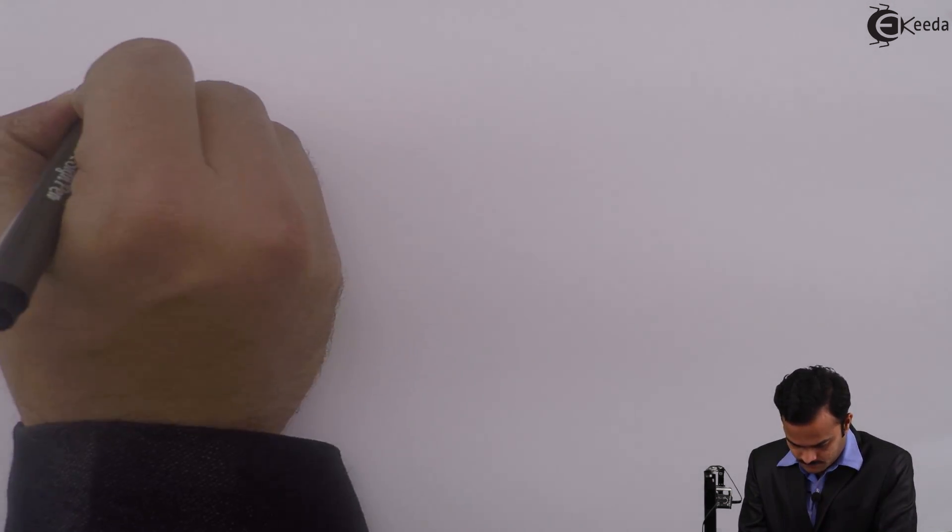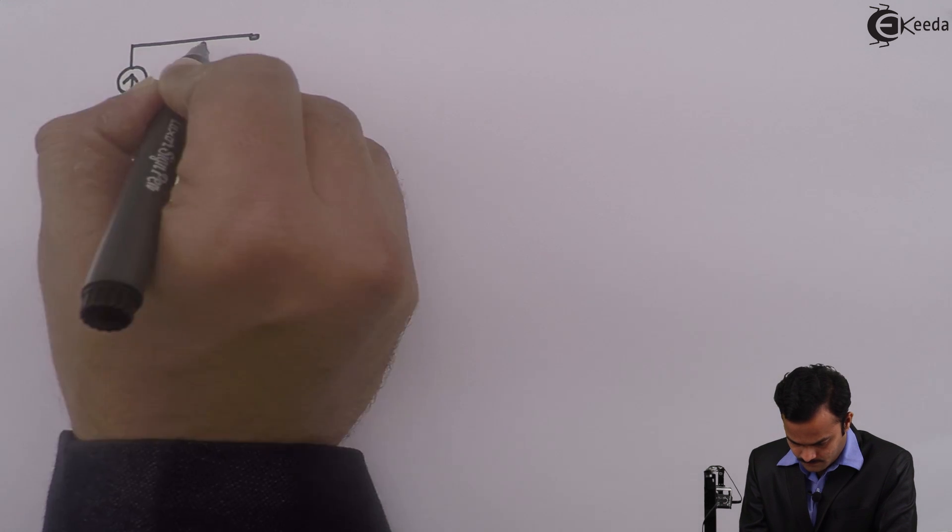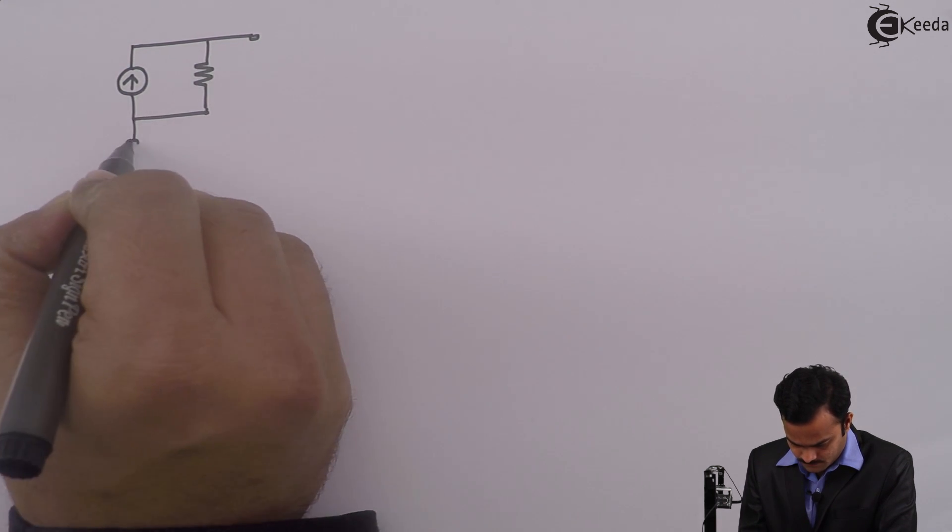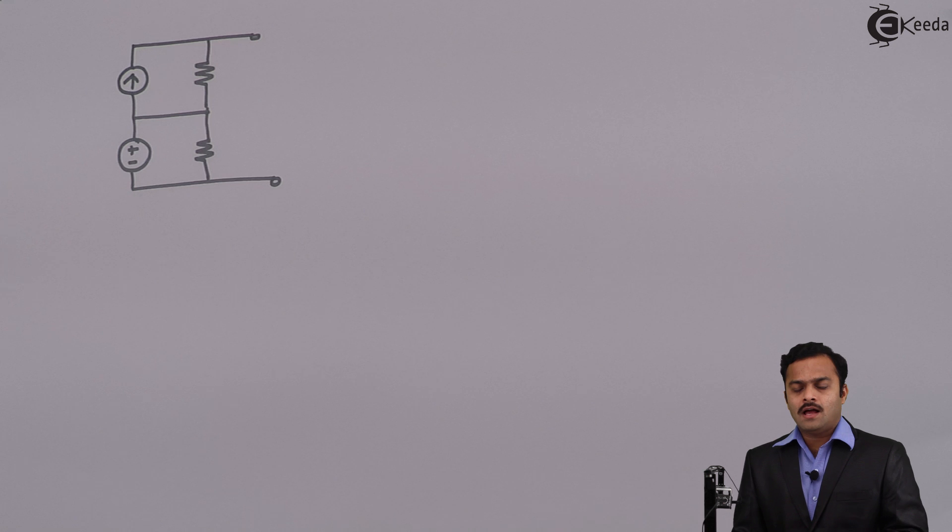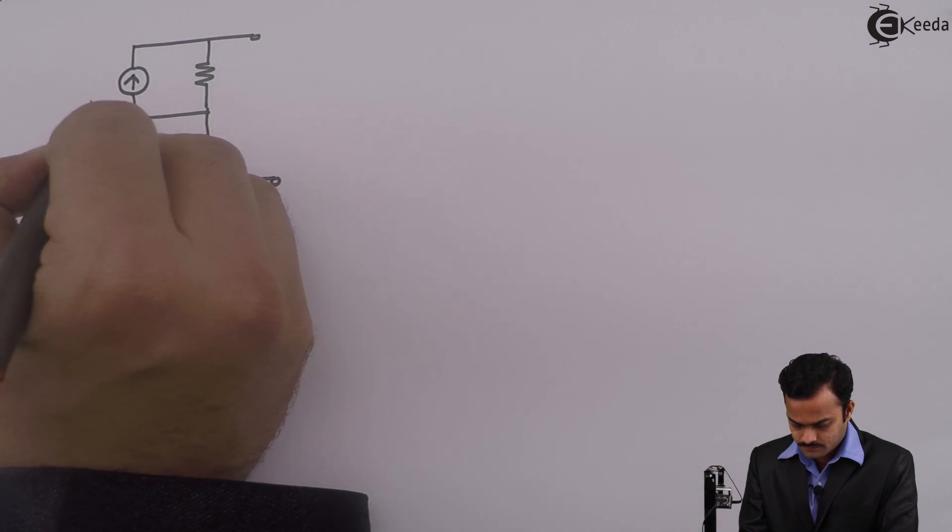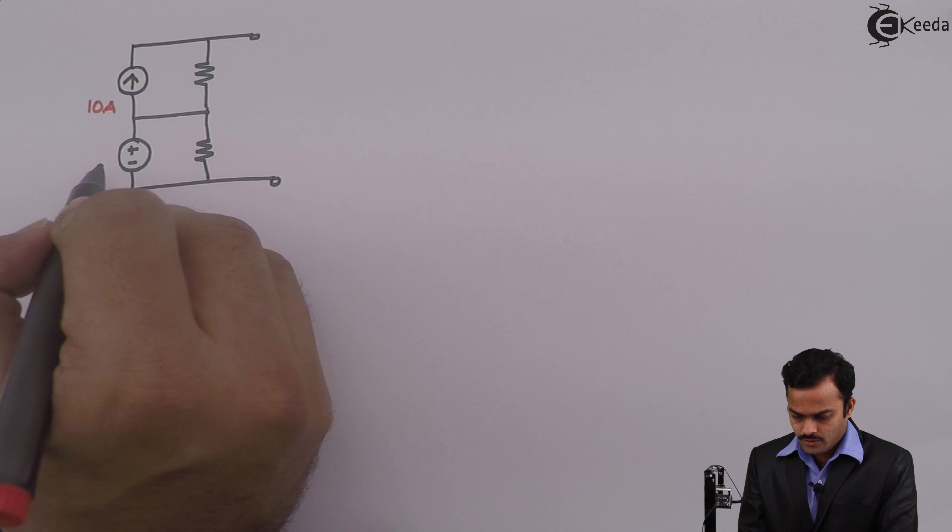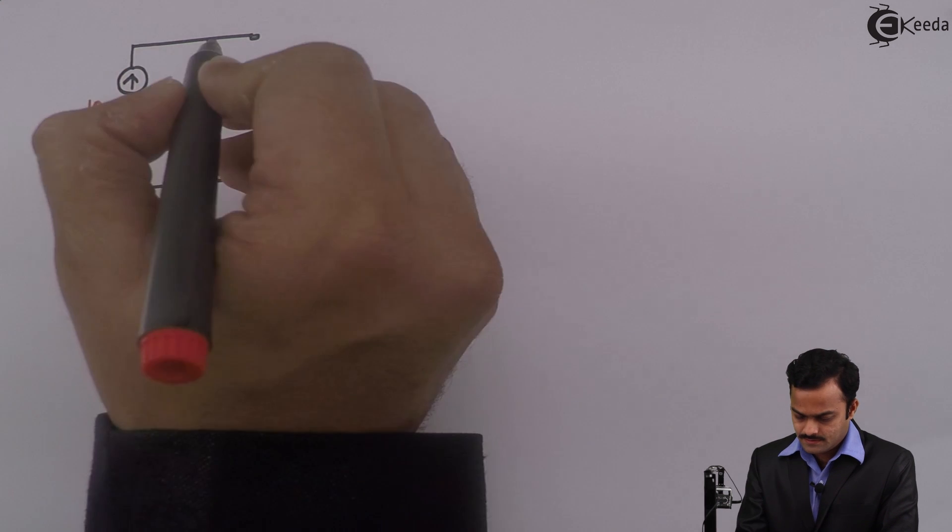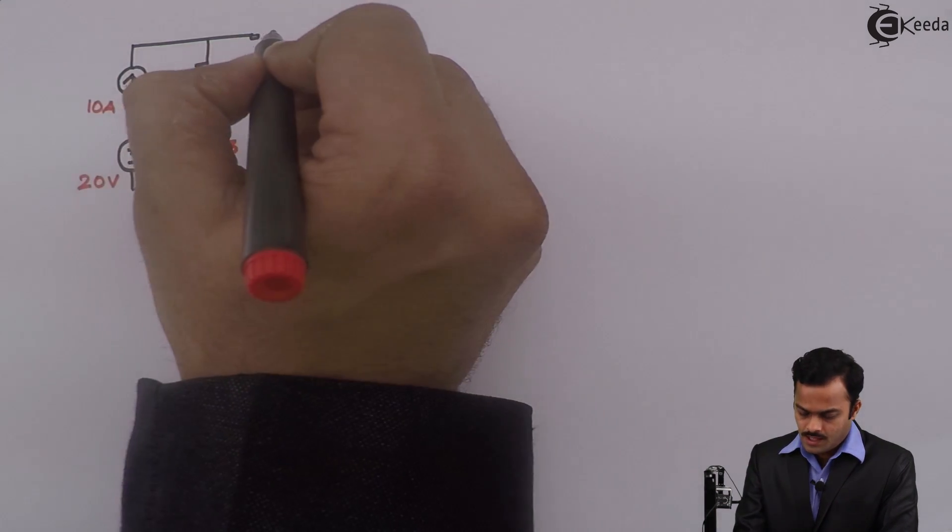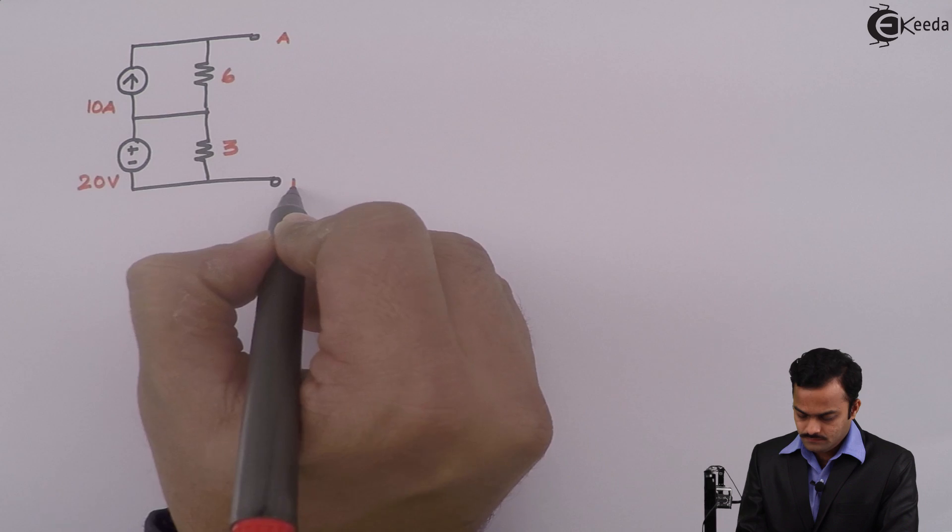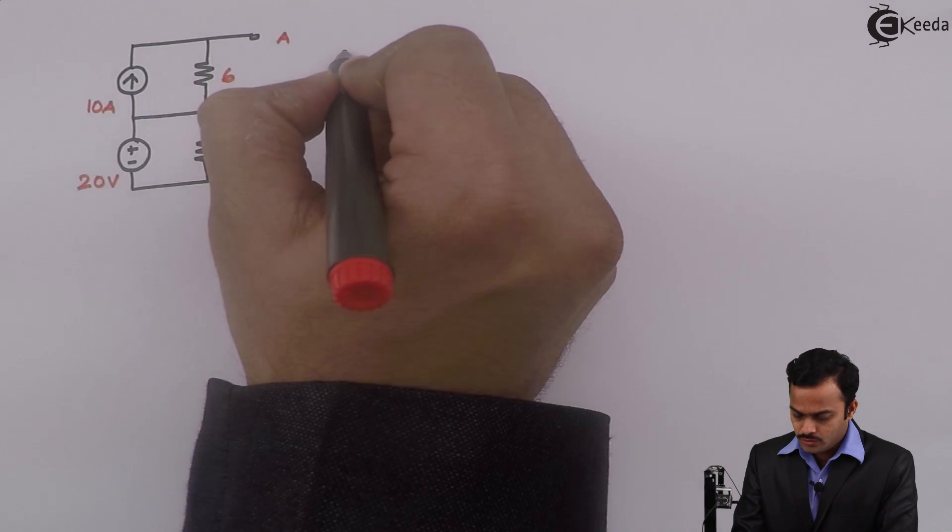Hi friends, let's see the application of Norton's theorem to a simple problem. In this problem I have a current source of 10 ampere and a voltage source of 20 volt with resistances 6 ohm and 3 ohm.